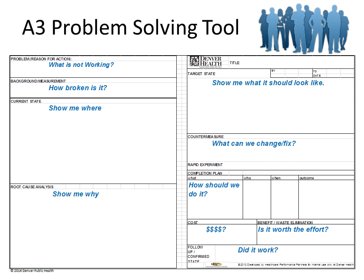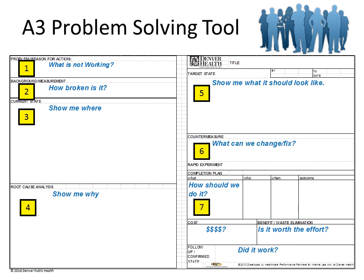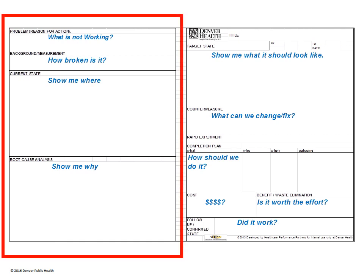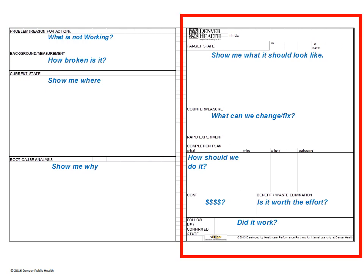A3s are best completed with a group of stakeholders — you should never A3 alone. Finally, you should complete one box in the tool at a time before moving on to the next. This sounds easy, but you will find yourself jumping ahead again and again. The A3 Problem Solving Tool has two sides: the left side focuses on the problem and why it is happening, and you will spend about 70% of your time there. The right side focuses on possible solutions and their implementation.